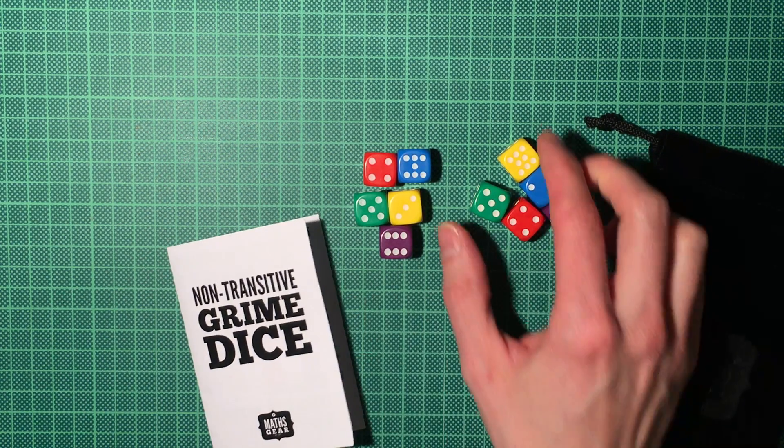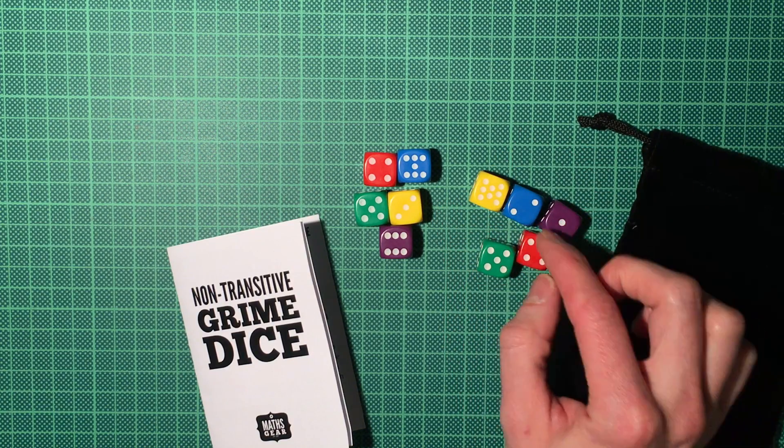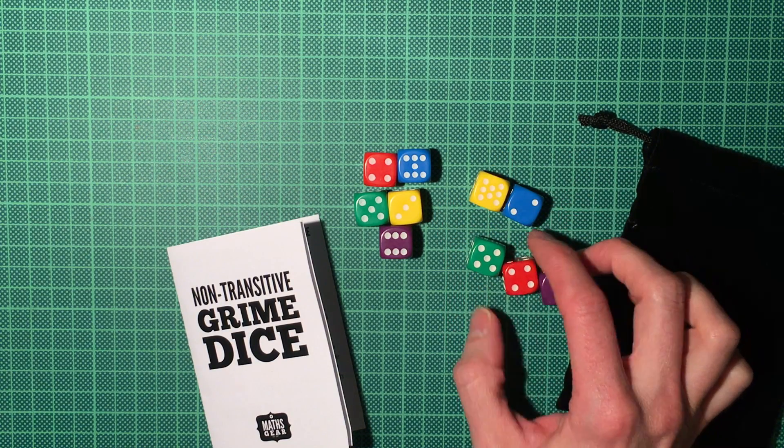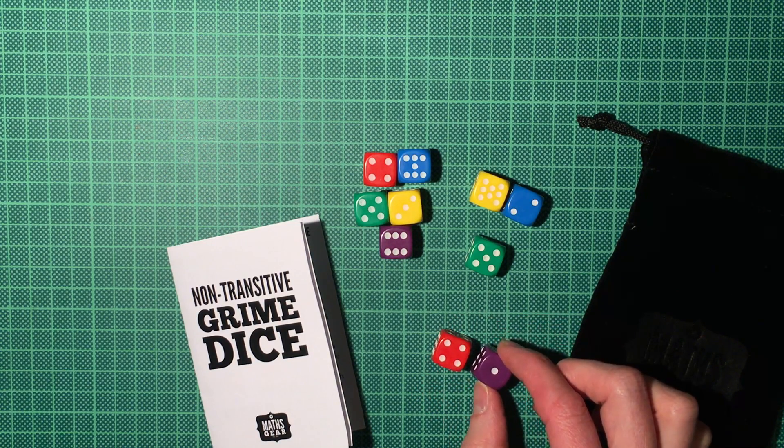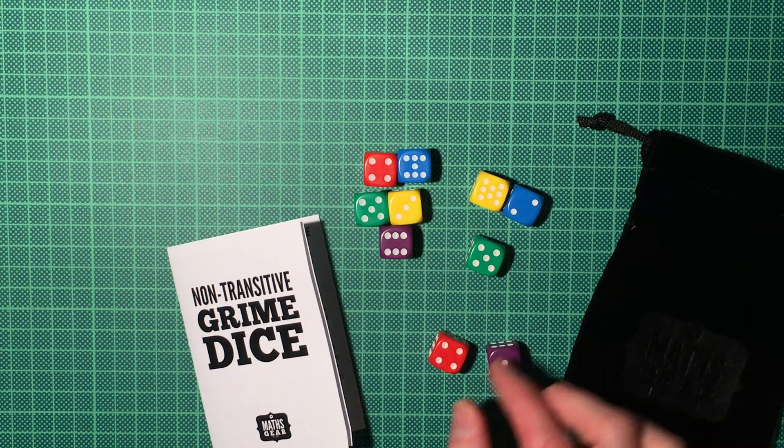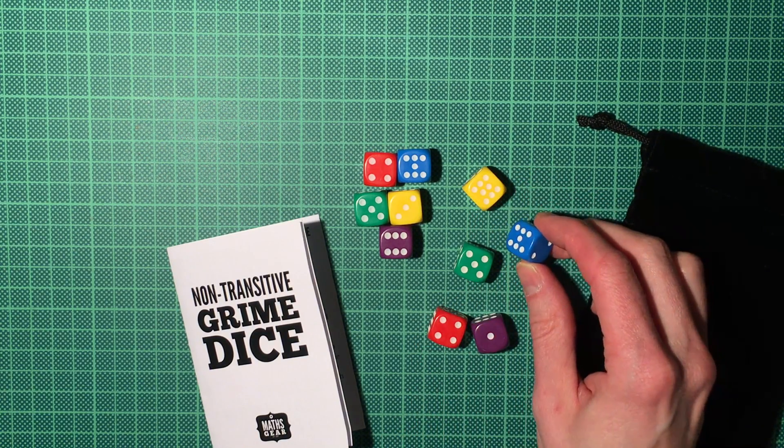And the non-transitive Dice are so that you can pick any two dice and always pick a set so that one beats the other. And there's no absolute best die in this whole set.